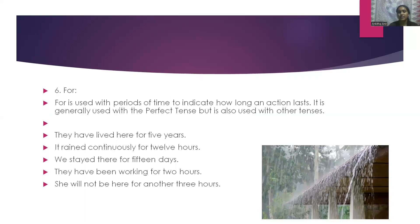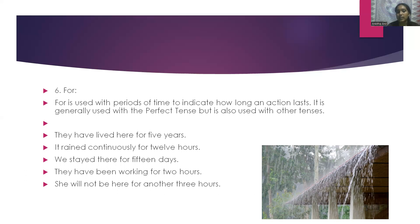The next word is 'for'. For is used with periods of time to indicate how long an action lasts. It is generally used with perfect tense but also used with other tenses. For example: they have lived here for 5 years. It rained continuously for 12 hours.